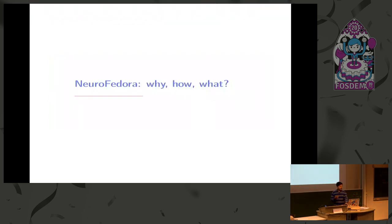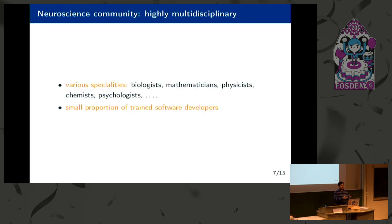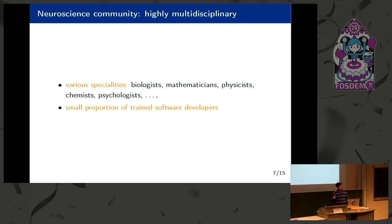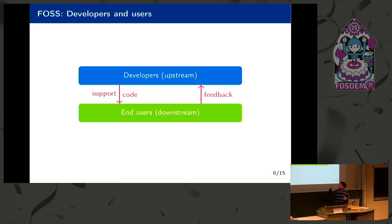So why NeuroFedora? The neuroscience community is full of people from different domains — not everyone is a software developer. Most people are biologists or data analysts. Only a small proportion of scientists working on research are trained software developers. They create tools that can be used by end users, but the main problem is that developers may not provide proper instructions or documentation on how to use the tool.